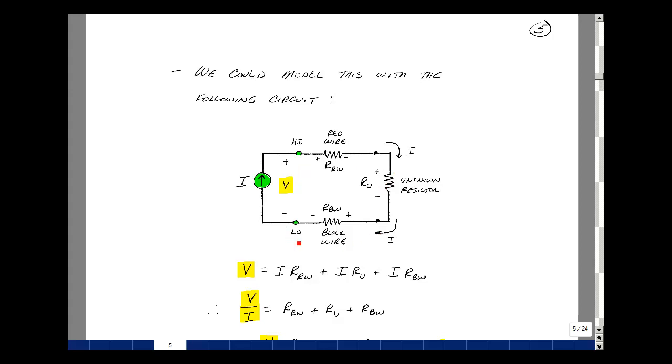You can do Kirchhoff's voltage law. The rise in voltage equals the drop across this resistor, the drop across this one, plus the drop across this one. What's the drop here? It's going to be the current I that's flowing times the resistance of the red wire, the current I times the resistance of the unknown, and then lastly, the current times the resistance of the black wire.